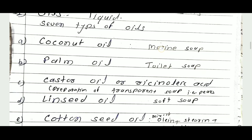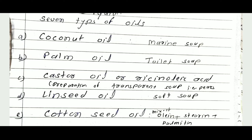Palm oil is mainly used for preparation of toilet soap. Palm oil is a glyceride of palmitin and olein, with about six percent free fatty acids. It is used as raw material for manufacturing toilet soap.